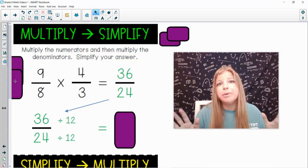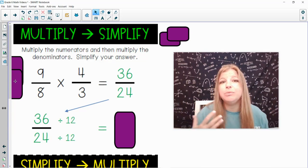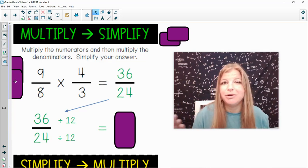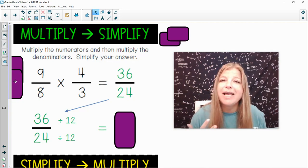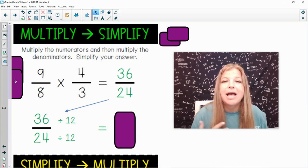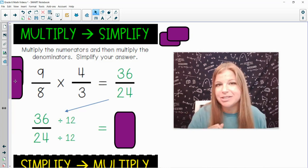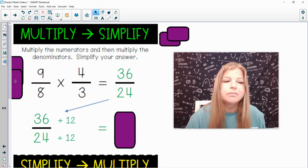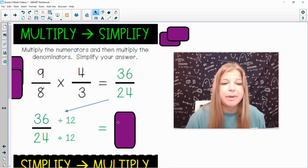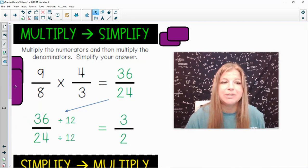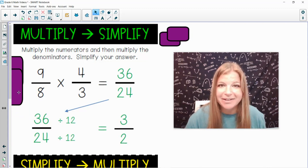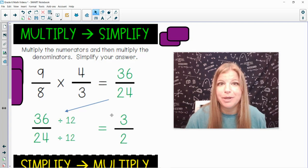Now, if you would not have thought of 12 and you pick a smaller number like 2 or 3 or 4 or 6, what you'll find is that the fraction you're left with, you can still simplify down further. And when you do that, it'll be the same answer that we're about to get right now. So, 36 divided by 12 is 3, and 24 divided by 12 is 2. And so, my answer is 3 halves. 9 eighths times 4 thirds gets me 3 over 2.